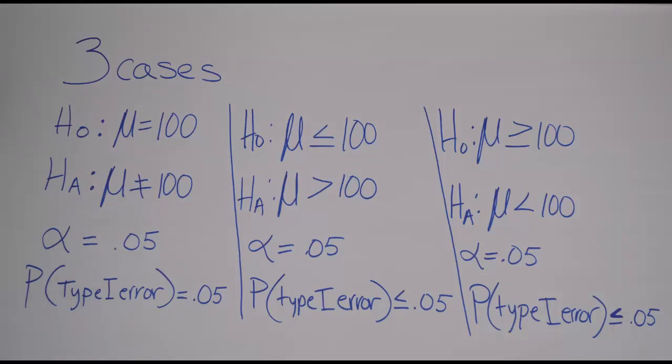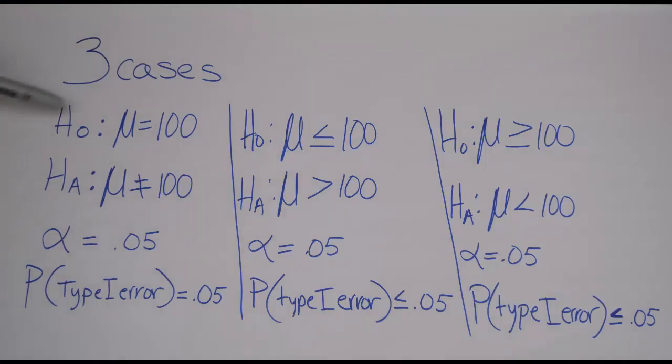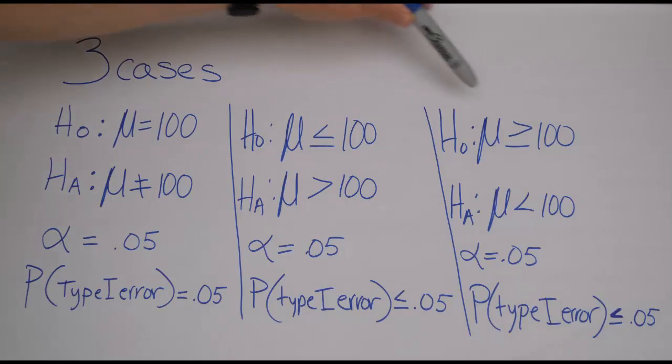So when my students are first learning hypothesis testing and they're doing these basic hypotheses where it's just a mean compared to a number, in those cases I provide my students three scenarios because I allow my null hypothesis to not just be equal but also be less than or equal to possibly or greater than or equal to depending what the problem says.